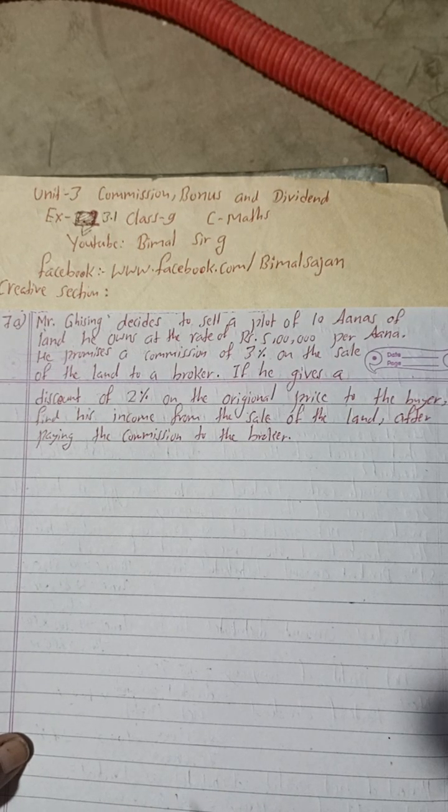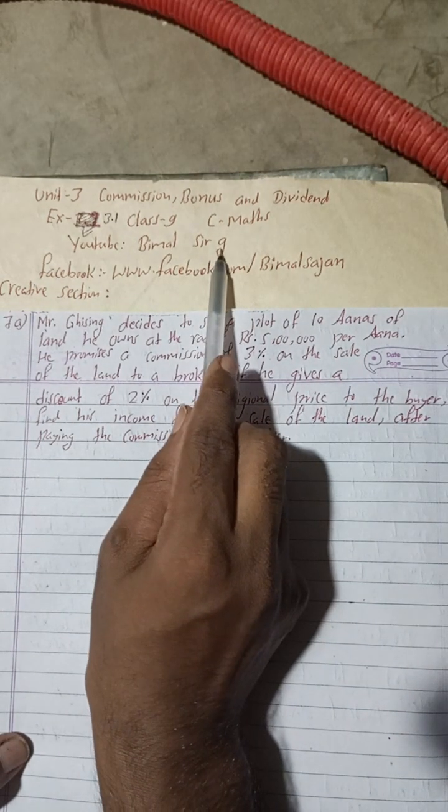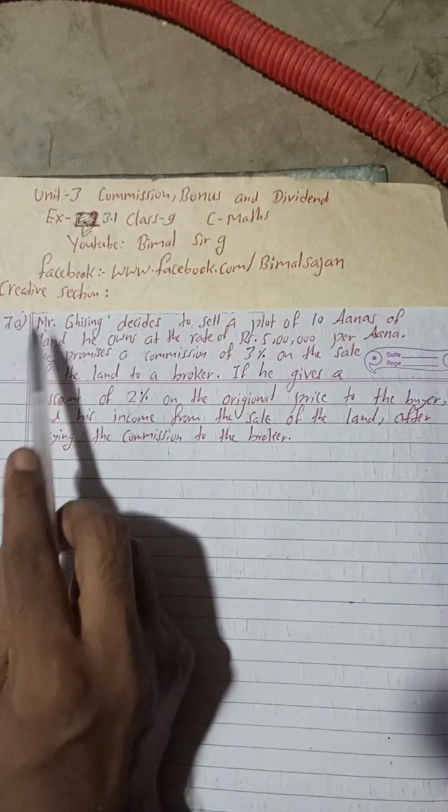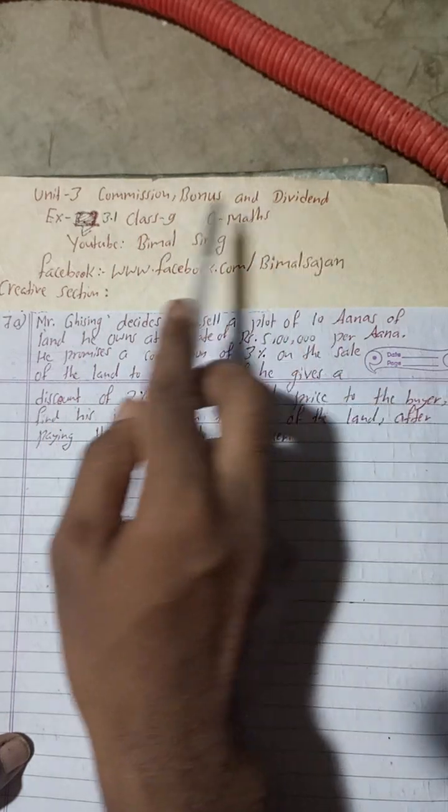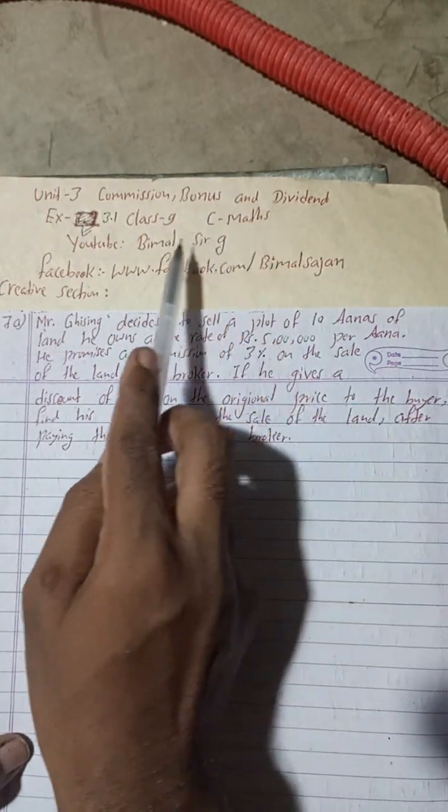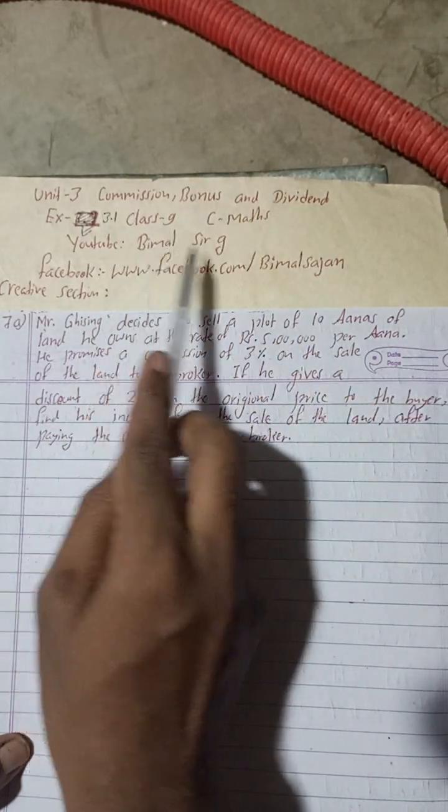Hi class 9 and 10 students, welcome back to Bimal Sarji YouTube channel. This is question number 7A of creative section, Exercise 3.1, Unit 3: Commission, Bonus and Dividend, Class 9 Compulsory Math.